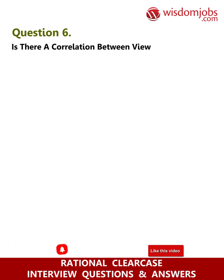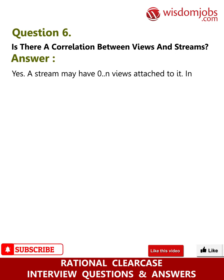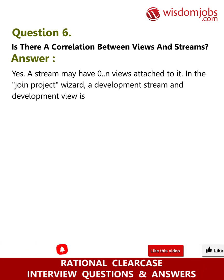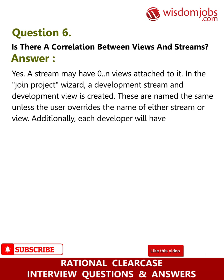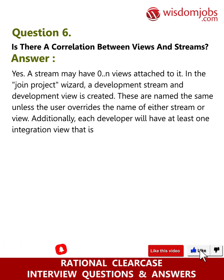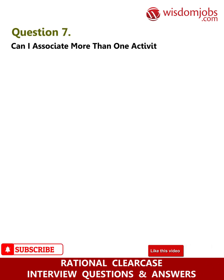Question 6: Is there a correlation between views and streams? Answer: Yes. A stream may have zero or more views attached to it. In the joint project wizard, a development stream and development view are created, and these are named the same unless the user overrides the name of either stream or view. Additionally, each developer will have at least one integration view attached to the project's integration stream.